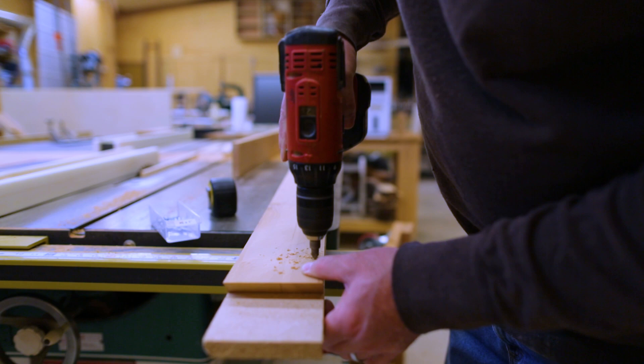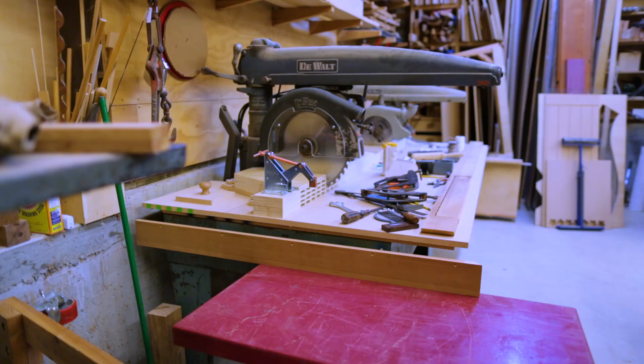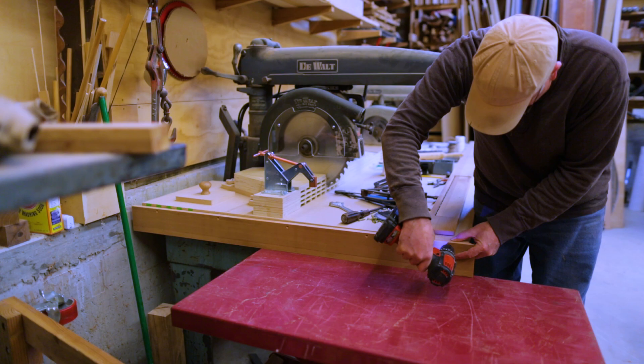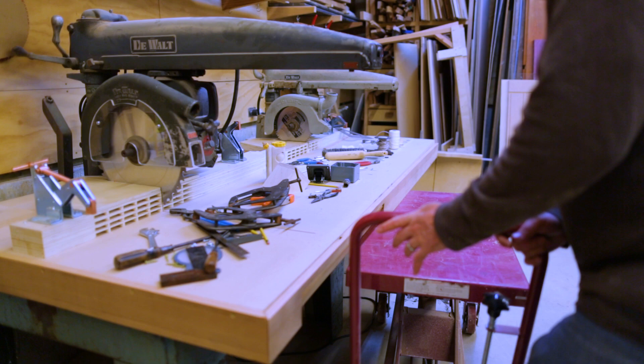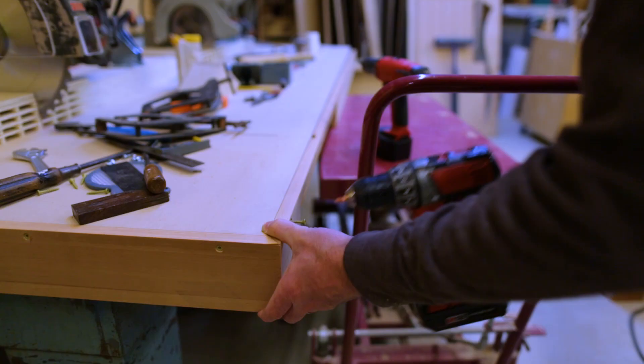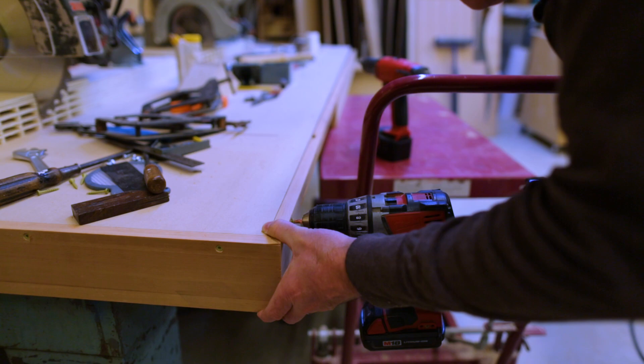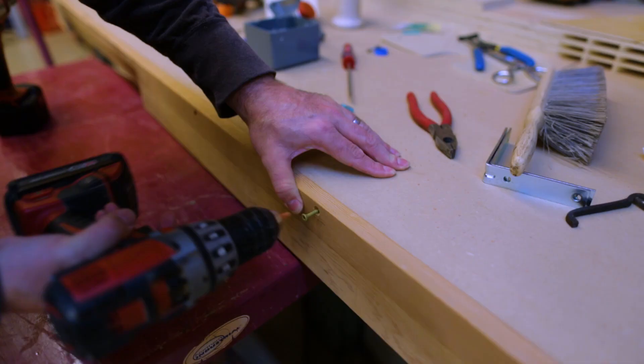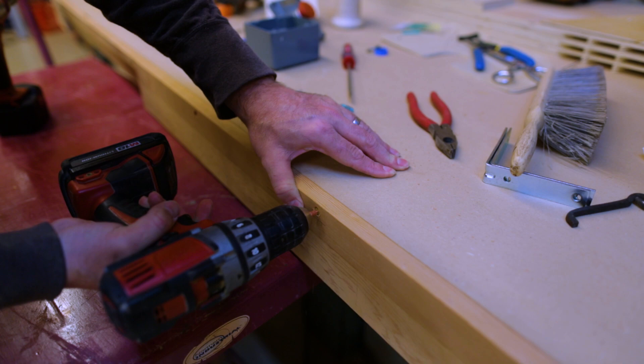Then I pre-drilled holes in the trim. I want the table to be replaceable. So I didn't want to use glue or nails on the trim. So I just used screws. So I did the side. Then I did the front. And then I did the other side. Keeping the miters as tight as I could and the top of the trim flush with the table.